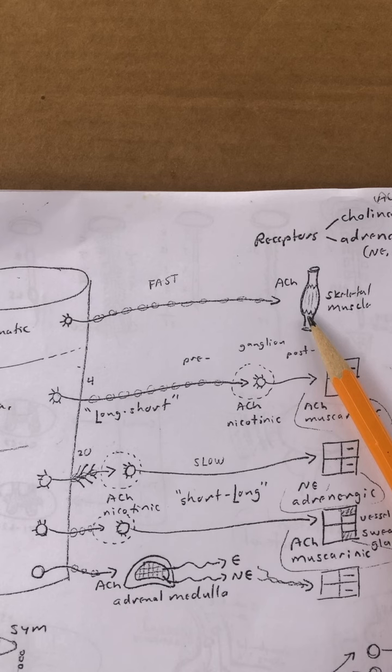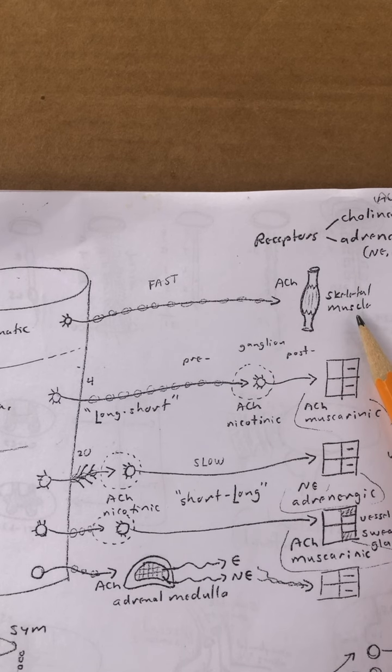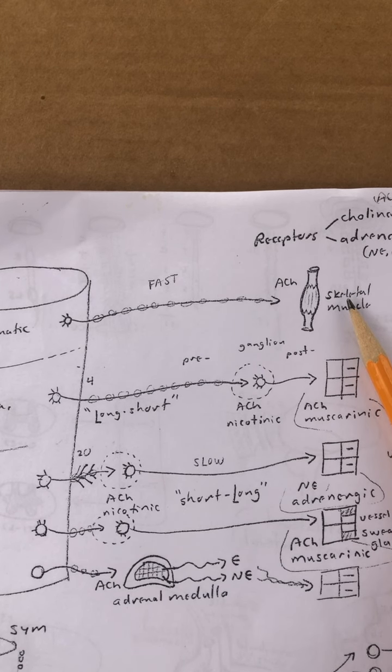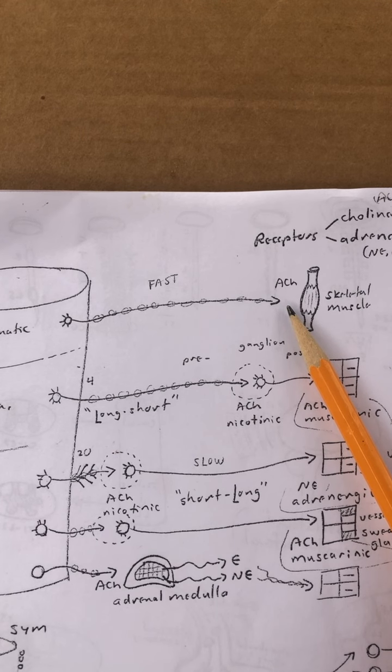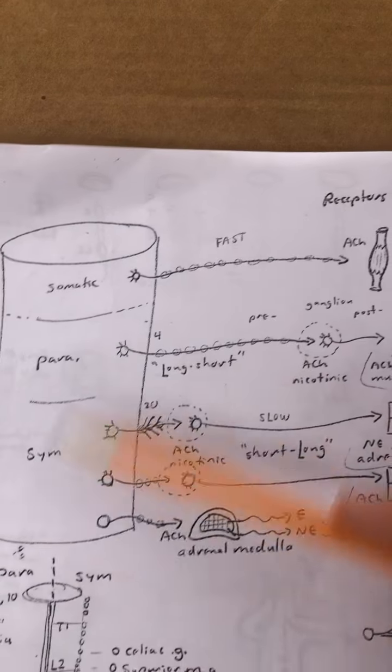One motor neuron goes the entire distance, there's one kind of effector muscle, one kind of muscle skeletal, and there's one significant synapse right here and one neurotransmitter, acetylcholine. Down here, the autonomic nervous system.